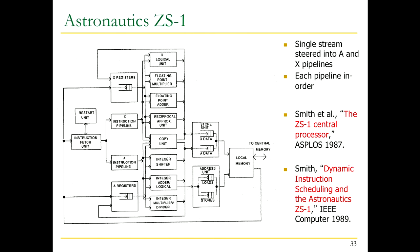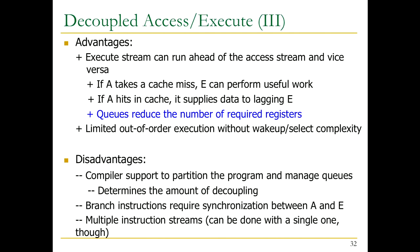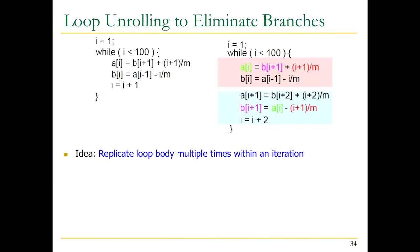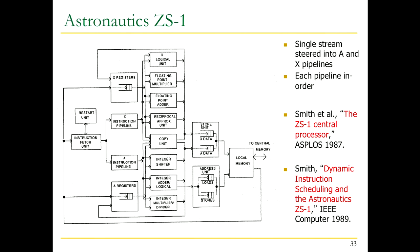The disadvantage: somebody needs to partition your program and manage the queues, because this determines the amount of decoupling you get. And if you have a branch instruction that's mispredicted, you need to flush both queues—the access queue may have gone ahead a lot. It also requires synchronization: branches affect control flow but are neither accesses nor executes. You need multiple instruction streams and must partition your program, which is hard.